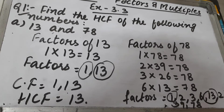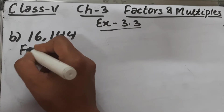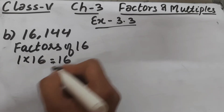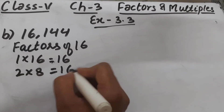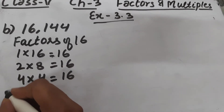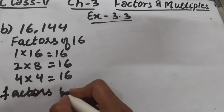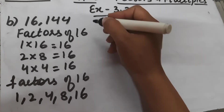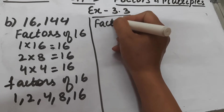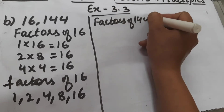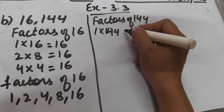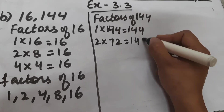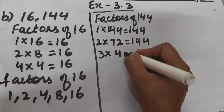That was part A of question one. Now let's start part B. Part B is 16 and 144. First we will write all the factors of 16: 1 × 16 = 16, 2 × 8 = 16, 4 × 4 = 16. Repetition has started, so the factors of 16 are 1, 2, 4, 8, and 16.